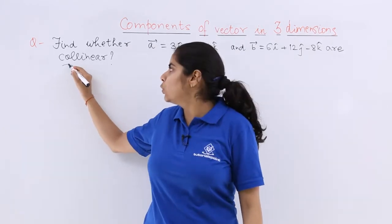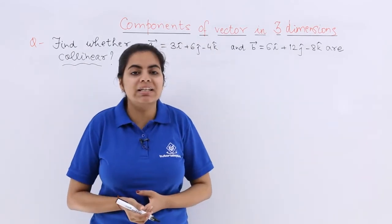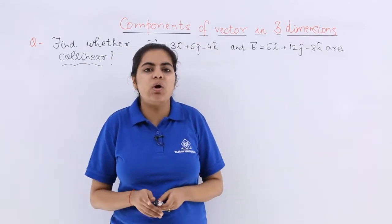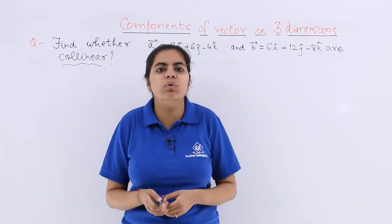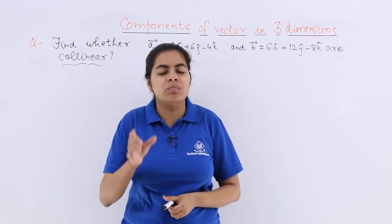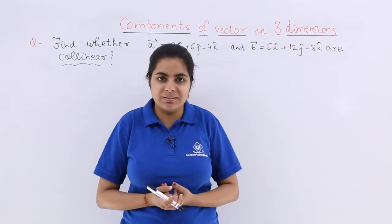This word is very important: collinear. What are collinear vectors? We stated that vectors may be called collinear if they are either having the same sense of support or the parallel sense of support. They should be equal in some terms or the other.